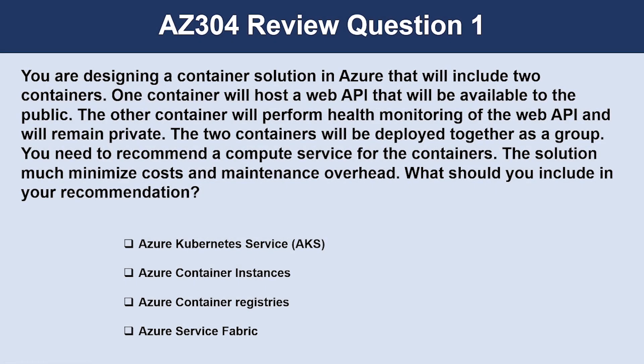Let us look at the first question. You are designing a container solution in Azure that will include two containers. One container will host a web API that will be available to the public. The other container will perform health monitoring of the web API and will remain private. The two containers will be deployed together as a group. You need to recommend a compute service for containers. The solution must minimize cost and maintenance overhead. What should you include in your recommendation? The correct answer is Azure Container Instances. ACI supports individual containers and multi-container groups, as well as sidecars and health monitoring.